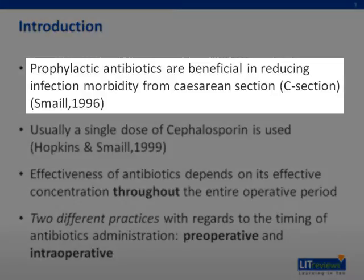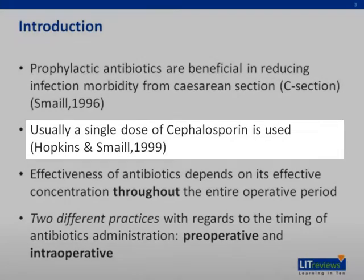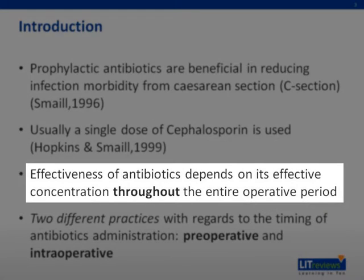It has been shown in a study in 1996 that prophylactic antibiotics are beneficial in reducing the rate of infections from cesarean sections. Usually, a single dose of cephalosporin is used in the administration of prophylactic antibiotics. It has also been shown that the effectiveness of the antibiotics depends on its sufficient concentration throughout the entire procedure of the operation.